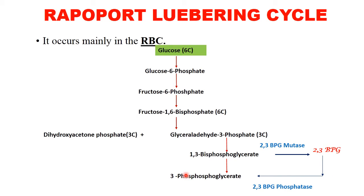This 2,3-bisphosphoglycerate is then broken down to 3-phosphoglycerate, bypassing the normal 1,3-bisphosphoglycerate to 3-phosphoglycerate step. Further glycolysis proceeds and pyruvate is generated. In anaerobic glycolysis, which accounts for about 15-20% of glucose molecules, it is converted to lactate. Now, how many molecules of ATP are generated during the Rapoport-Luebering cycle?